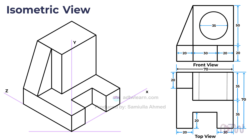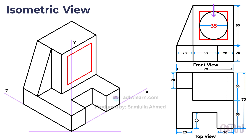Now let's draw the circular hole. The diameter of the hole is 35 millimeters, and it's located at the exact center of the top portion of the object. To properly depict the hole in the isometric view, we need to draw a square with sides equal to the diameter of the circle, which is 35 millimeters, positioned at the center. The width of the outer square is 50 millimeters, so there will be a 7.5 millimeters distance between the outer and inner squares.